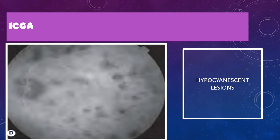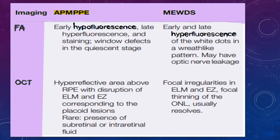On ICGA, since the choroid is affected in choroiditis, you will see hypocyanescent lesions. Comparing APMPPE and MEWDS on FFA and OCT: in APMPPE, FFA shows early hypofluorescence and late hyperfluorescence with subsequent window defect; in MEWDS, FFA shows early hyperfluorescence in a wreath pattern and also late hyperfluorescence. On OCT, APMPPE shows hyperreflective areas above the RPE with disruption of the external limiting membrane and ellipsoid zone corresponding to the placoid lesion, with rare subretinal and intraretinal fluid; in MEWDS the irregularity is focal and less extensive.